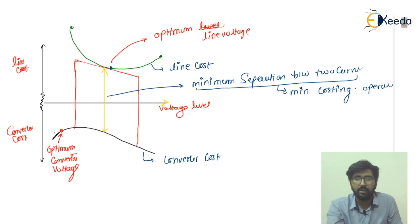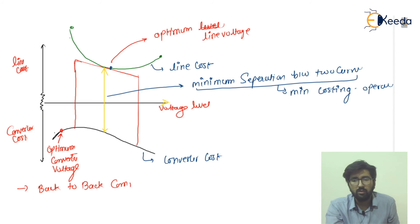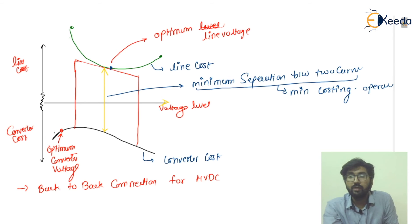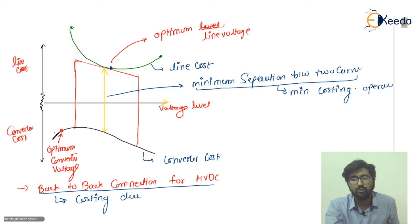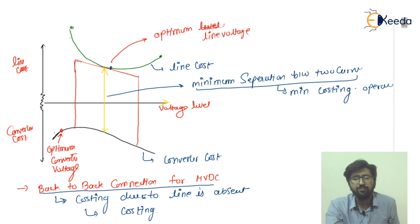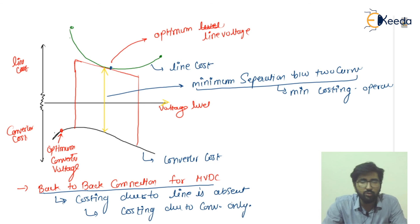This is the basic fundamental diagram. Now, if I'm talking about the back-to-back connection for HVDC, one thing to remember is that the costing due to the line is absent. So for back-to-back HVDC, we will only consider the costing due to the converter only. I hope you have understood up to this point. We will discuss the next topic in the next lecture. Goodbye.